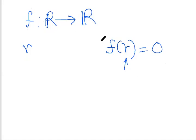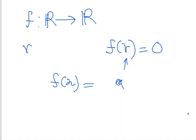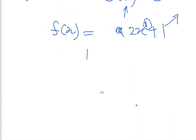Before talking about nonlinear functions, let me take an example of a linear function. What do you mean by a linear function? Here x is the independent variable. Let's take 2x plus 1. This is called a linear function — it's a first-order polynomial, meaning the highest degree is 1. For linear functions, it is very easy to find exact solutions.